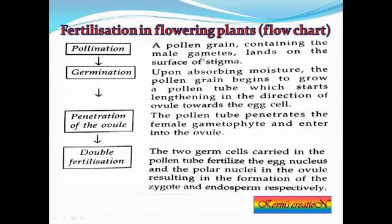After pollination, the pollen grain containing the male gametes lands on the stigma and absorbs moisture, causing it to grow a pollen tube that lengthens toward the ovule and the egg cell. The third process is penetration of the ovule — the pollen tube penetrates the female gametophyte and enters the ovule.